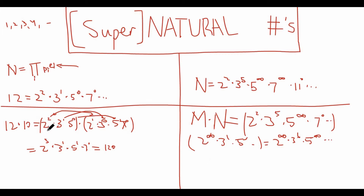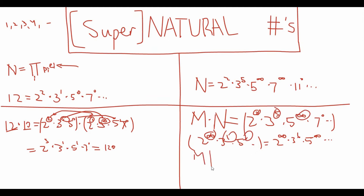In the regular natural numbers, if all the exponents of one number are less than or equal to the corresponding exponents in another number — for example, if one exponent is 2 and the other is 3, or one is 1 and the other is 5 — then we know the first number divides the second. In a similar fashion, with supernatural numbers, if each exponent of m is smaller than the corresponding exponent of n, then m divides n.